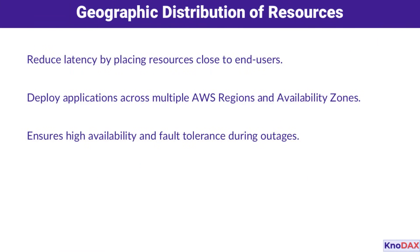First, let's talk geography. To reduce latency and improve user experience, it's essential to place your resources close to end users. Deploying applications across multiple AWS regions and availability zones not only ensures better performance but also guarantees high availability and fault tolerance in case of outages. It's like having your business reach wherever your customers are.